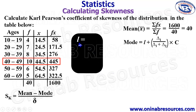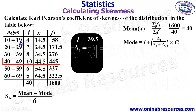L means the lower class boundary of the modal class. This is the modal class, and this is the lower limit. To get the lower class boundary, we add 39 plus 40 and divide the sum by 2, which gives us 39.5. So the lower class boundary of the modal class is 39.5. Delta 1 is the difference between the frequency of the modal class and the class before it. Since the distribution is arranged in ascending order, we have 10 minus 8, which gives delta 1 equal to 2.